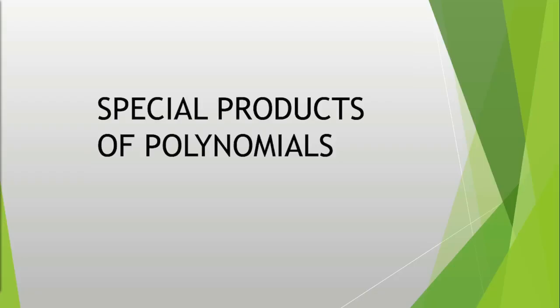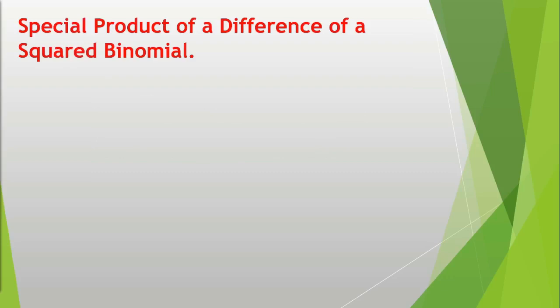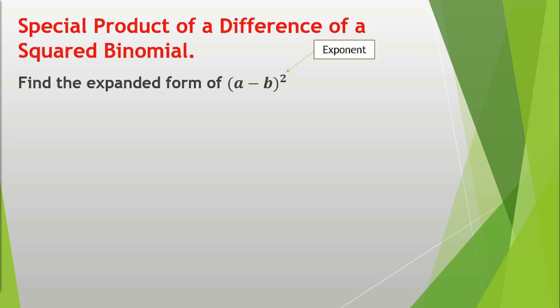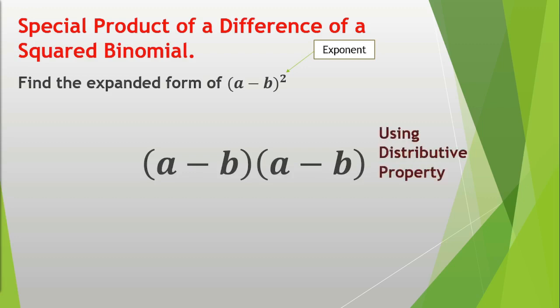Our next lesson is getting the special product of a difference of a squared binomial. Find the expanded form of the quantity of (a minus b) raised to the power of 2. First, analyze the value of the given exponent of the binomial. Since it's a squared binomial, therefore it will do self-multiplication twice. Then we multiply two binomials using the distributive property.